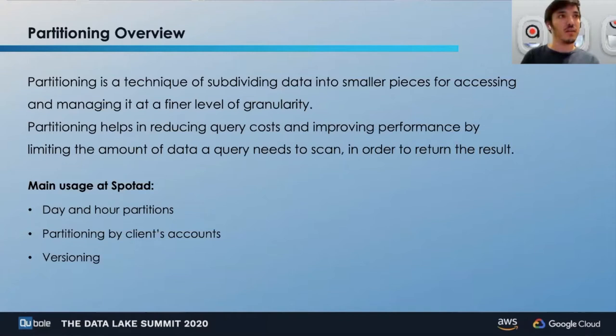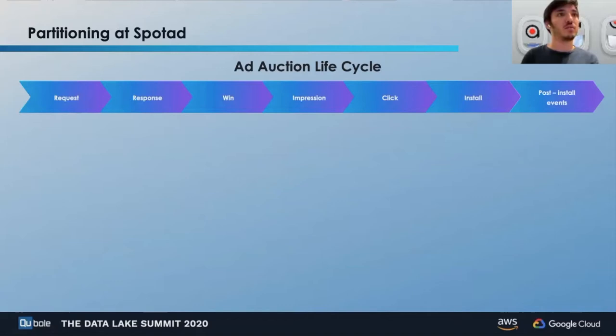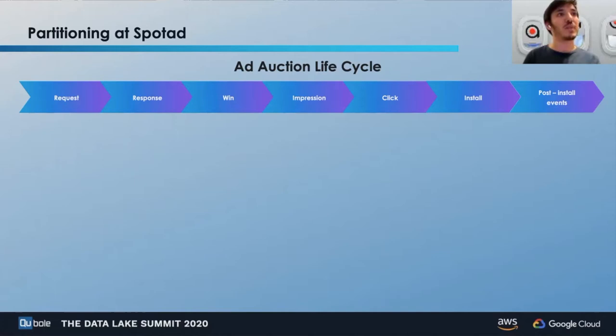Let's move on to some challenges we deal with in our day-to-day life here at SpotEd. The chart here shows the ad auction life cycle — this is the optimal ad auction life cycle. The cycle starts with a bid request sent by the supplier; we at SpotEd choose whether we want to participate. If we do, we reply with a response that includes the bid price. If the bid price is high enough, a win occurs leading to an impression. If the user clicks the ad, it leads to a click event, then hopefully an install, and then post-install events such as registration and purchase.